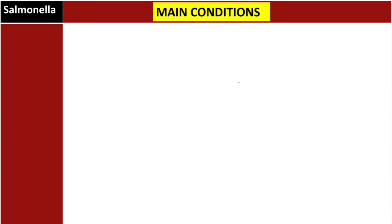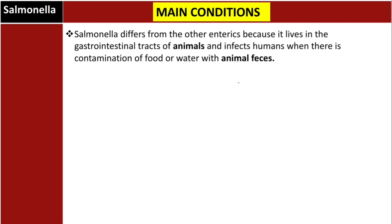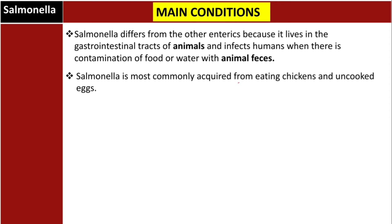Let's talk about the main conditions caused by Salmonella. Salmonella differs from other enteric bacteria because it lives in the gastrointestinal tracts of animals and infects humans when there is contamination of food or water with animal feces. If animals come into contact with vegetables in a garden or a water source, that is how it infects humans. Salmonella is most commonly acquired from eating chicken and uncooked eggs.